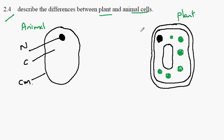In the plant cell we have these structures also. So the nucleus is present, the cytoplasm is present, and the cell membrane on the inside here is also present.